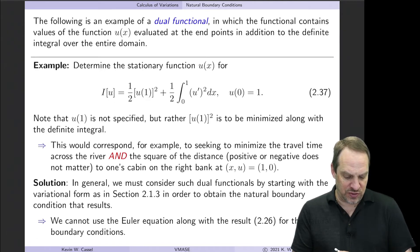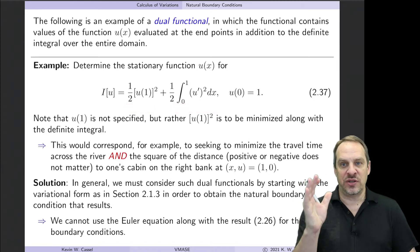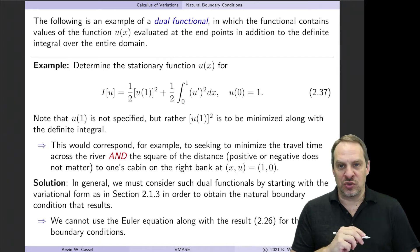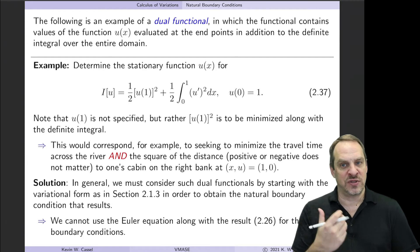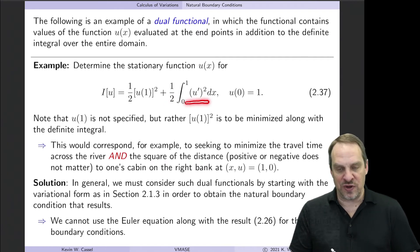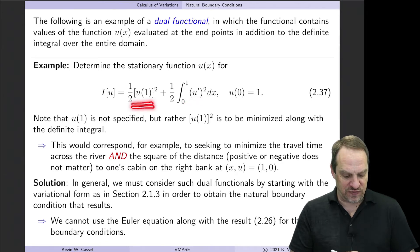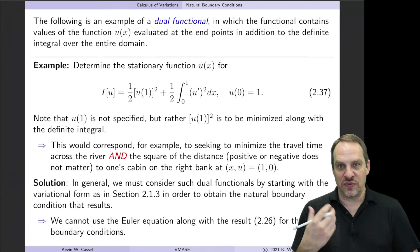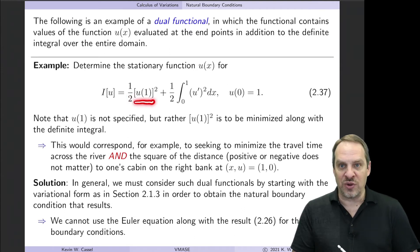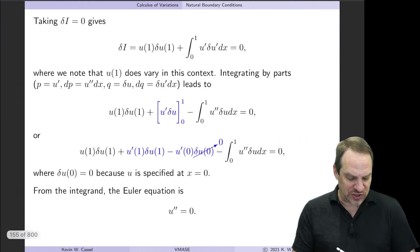Let's take the variation of both terms. For the familiar definite integral, the variation of the integral equals the integral of the variation, since the limits of integration do not vary. So we take the variation of u-prime squared, which gives two times u-prime times delta u-prime. The factor of two cancels with the one-half, leaving u-prime times delta u-prime inside the integral. For the endpoint term, the variation of something squared is two times the something times its variation, so the one-half cancels with two, giving u(1) times delta u(1).